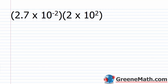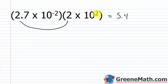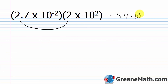For 2.7 times 10^-2 multiplied by 2 times 10^2: multiply 2.7 by 2 to get 5.4, then 10^-2 times 10^2 equals 10^0, which is 1. So the result is 5.4 times 1, which equals 5.4.